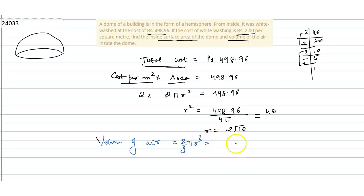So here it will be 2/3 into 22/7 into r, which is 2³ into 10 to the power 3/2. The value is 31.6.